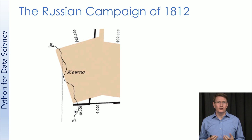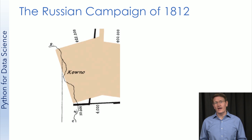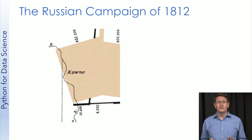They started with around 450,000 troops — although some estimates are actually higher — and they ended with barely 10,000. So how were those losses suffered? Let's briefly talk through this campaign using the figure.